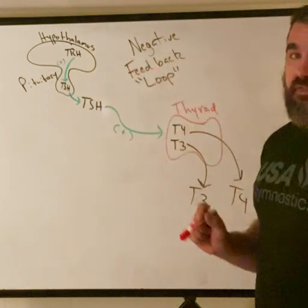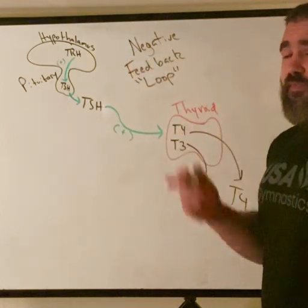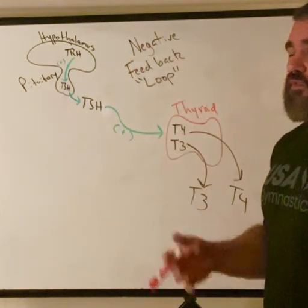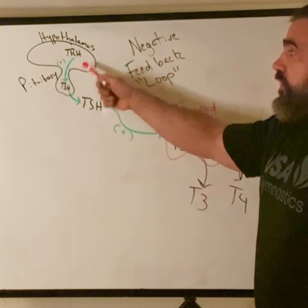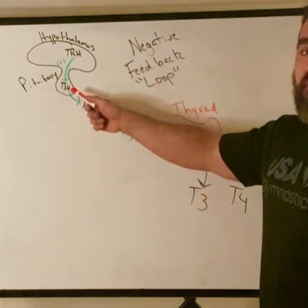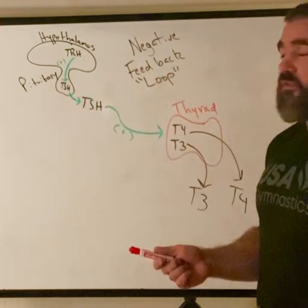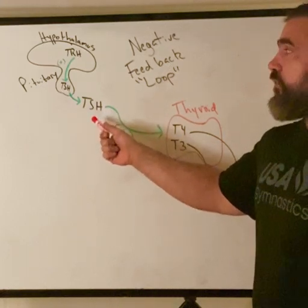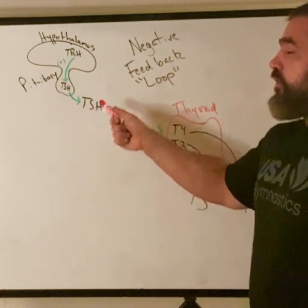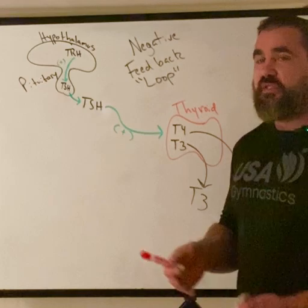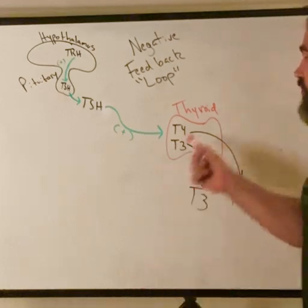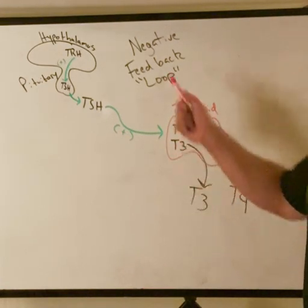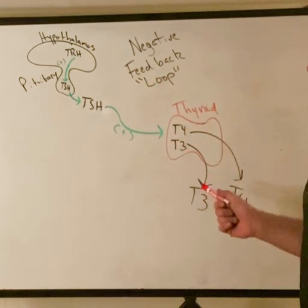The hypothalamus releases a substance called TRH, or thyroid releasing hormone. That's going to act on the anterior pituitary to release TSH, or thyroid stimulating hormone. And thyroid stimulating hormone is going to stimulate the thyroid to produce thyroid hormones T4 and T3. So this is a cascade of events.